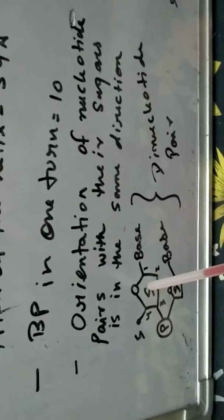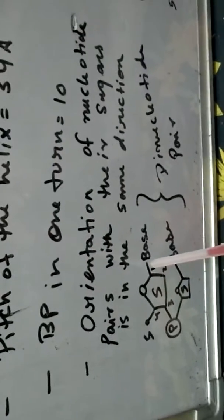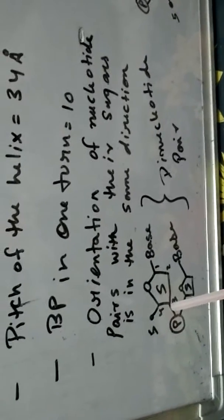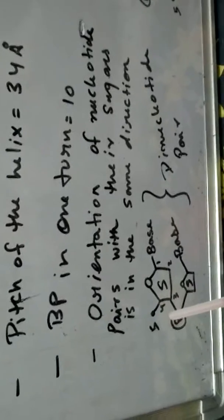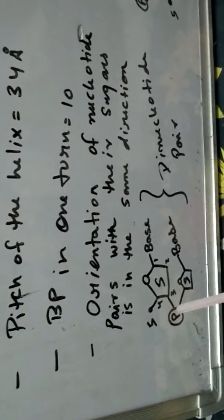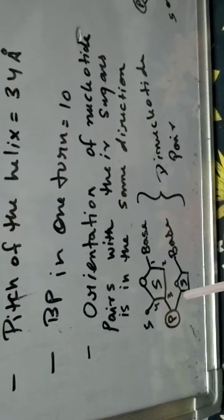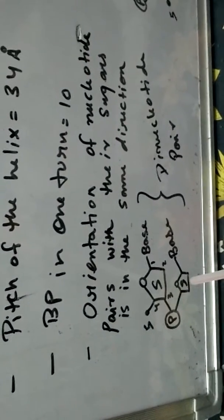So this is the ribose sugar. At carbon number one, a nitrogenous base is attached. The 3 prime carbon has the phosphodiester linkage which is bonded with the 5 prime carbon of the second sugar here.